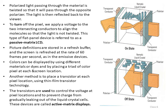To turn off a pixel, a voltage is applied to the two intersection conductors to align the molecules so that the light is not twisted. This type of flat panel display is called passive LCD. The picture definition is stored in a refresh buffer and the screen is refreshed 60 frames per second. Color can be displayed using colored dyes by placing a triad of color pixels at each screen location. Another method is to place a transistor at each pixel location using thin film transistor technology, where the transistor controls the voltage at the pixel level to prevent charge from leaking out of the liquid crystal — this is called an active matrix display.